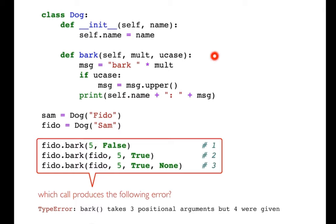I have a method here that does the actual speaking or barking of the dog. It's going to bark some number of times, and then down here I'm actually creating two different dogs. Down here I have three different ways that I could call the bark method with varying number of arguments passed in.